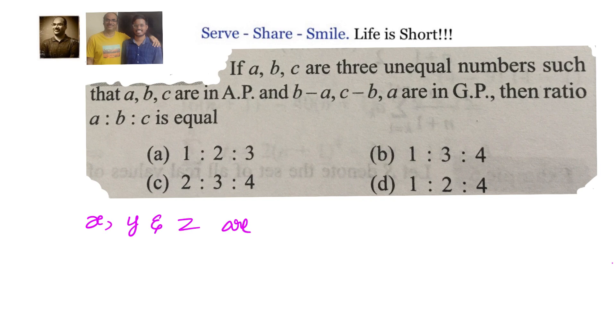Let us say suppose X, Y, Z are in AP or X, Y, Z are in geometric progression GP, then what is the relation between X, Y and Z? We know that if X, Y, Z are in AP, then Y minus X equals Z minus Y.